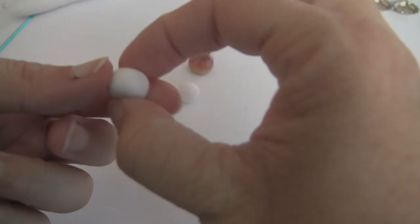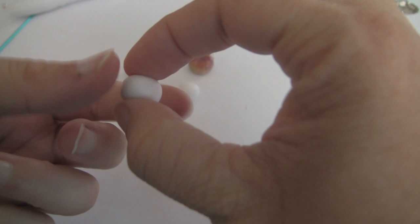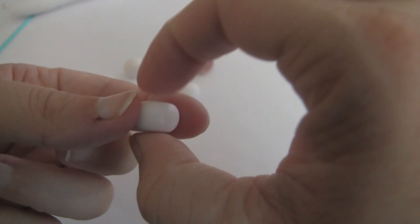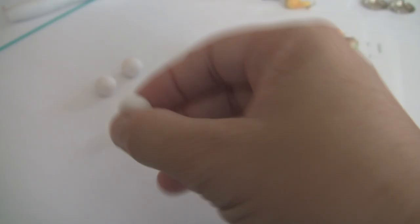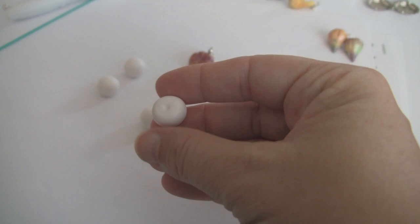So I roll a ball in my hands. I twist with my left hand index and thumb, and then I press gently with my thumb and my index on the other side. So there's my pumpkin shape. I take the back of my paintbrush and make a little indent on the bottom, little indent on the top.